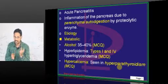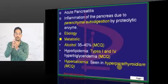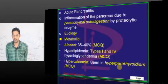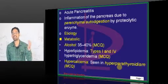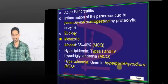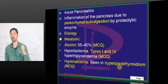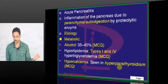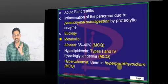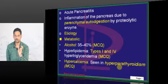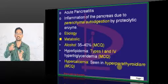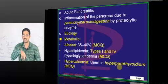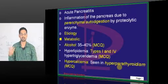Co-localization: the zymogen granules and the lysosomes both become localized together. This can happen because of an insult — in the form of a gallstone, trauma, alcohol, or sometimes no identifiable cause (idiopathic). Co-localization causes premature activation of the enzymes, which then causes autodigestion of the pancreas — this is pancreatitis.